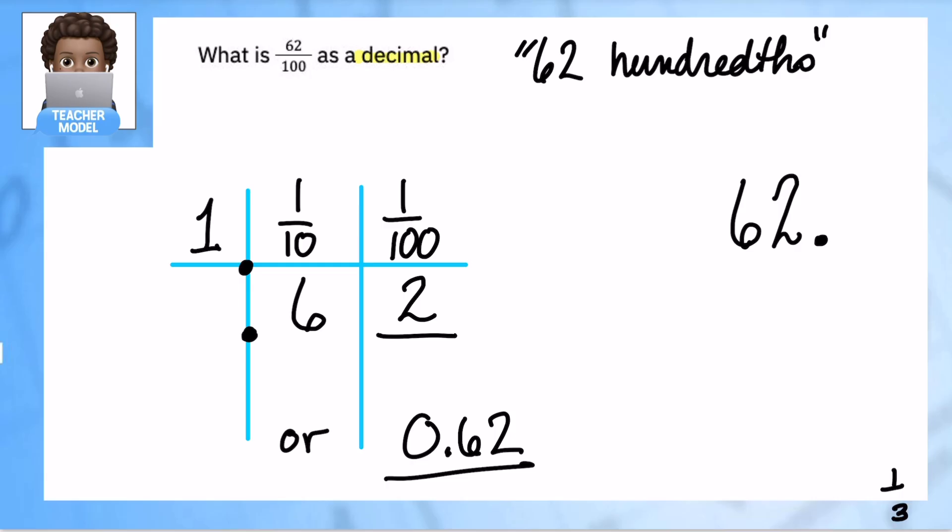If I have a decimal after the two, this is like 62 ones, tens, hundreds. Now I know I'm in the right place, that is 62 hundredths. All right, so hit pause and jot this down into your notes.